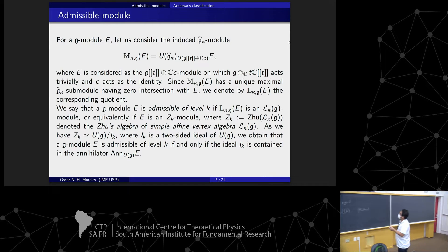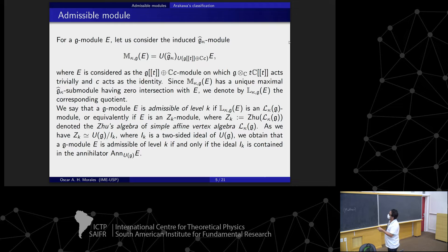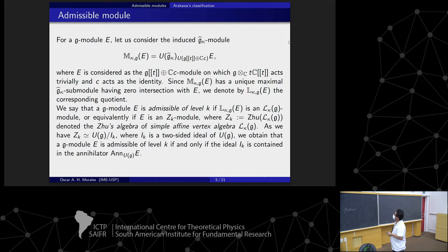If this module is an admissible module of the vertex algebra, but this corresponding direction — we will not look at the full algebra. Now it is equivalent to say: a is a Z_k module for the algebra, in the simple affine vertex algebra.